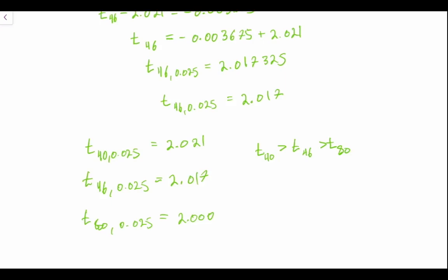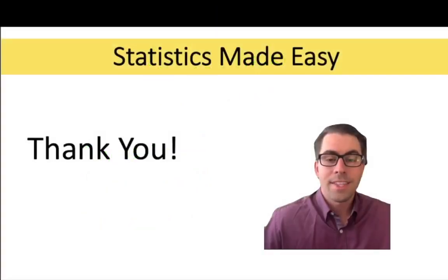Oftentimes you can just use the conservative estimate and round down, or you can use computation. But if you had to do this by hand and you needed the exact t-critical value, you could just use this method here, which is known as interpolation.